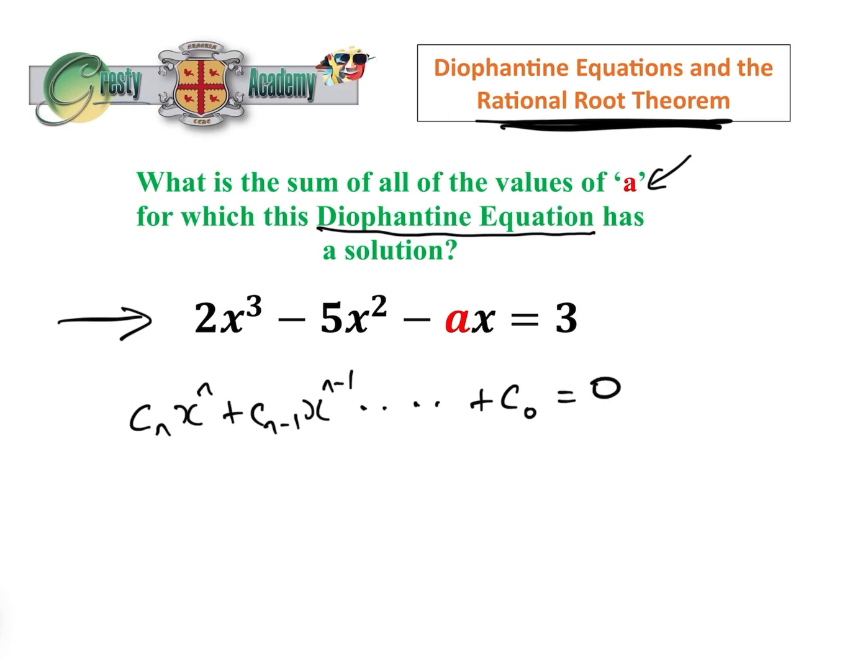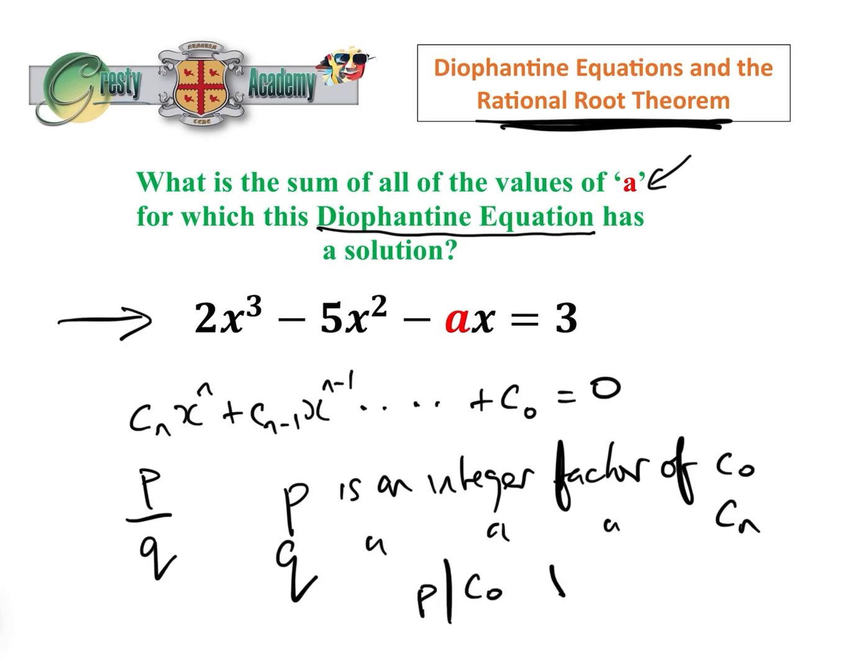If all of the coefficients are integers, i.e. all of the c are integers, and if there is a rational solution, let's call it p over q, where p and q are co-prime, i.e. we have got rid of all of the common factors of p and q, then p is an integer factor of c0, and q is an integer factor of cn, i.e. p divides c0 and q divides cn.